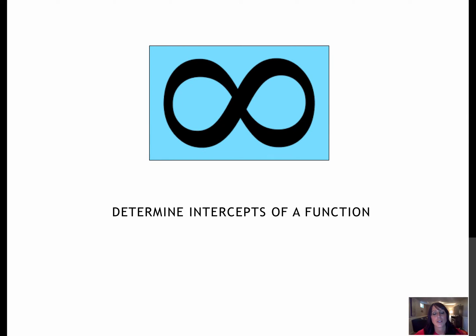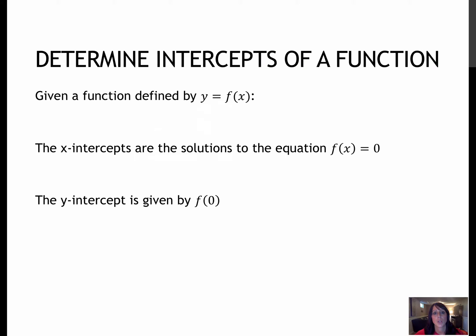For this lesson, we will determine the intercepts of a function. We've talked a little bit already about how to find x and y intercepts. It's really the same idea, so this is going to be specifically functions defined by y equals f of x, meaning that y is going to be all by itself. It will either be y or it will be f of x, and that will be on one side of the equation.